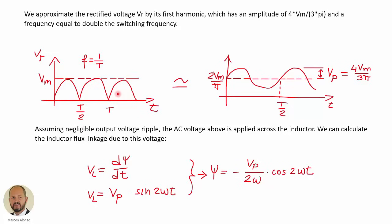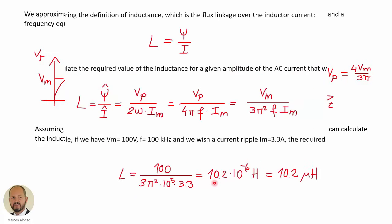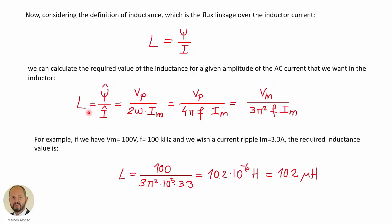Here we have how we did it in the previous video. This is the rectifier voltage, and we approximated this voltage with the average value and the first harmonic. So the first harmonic is the voltage we are applying across the inductor — this is an approximation to the actual voltage. By doing the integral, we can calculate the flux linkage, and from it we can calculate the value of the inductance by the ratio of the peak value of the flux linkage to the peak value of the current through the inductor.